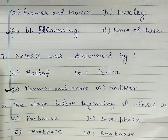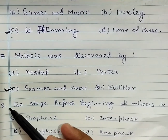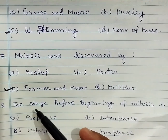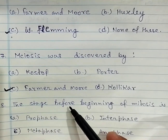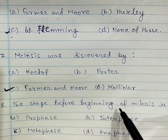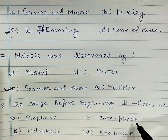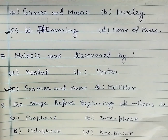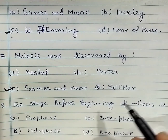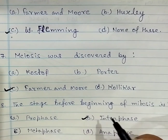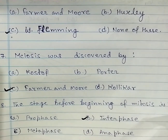Question number eight: the stage before the beginning of mitosis is — A: prophase, B: interphase, C: metaphase, D: anaphase. The correct answer is interphase.